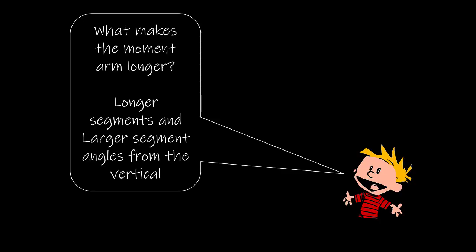So if we ask ourselves what makes the moment arm longer, one obvious answer would be longer segments. But larger segment angles from the vertical are also going to lead to longer moment arms. And when that segment angle is 90 degrees from the vertical, the moment arm of the external force will be its largest.